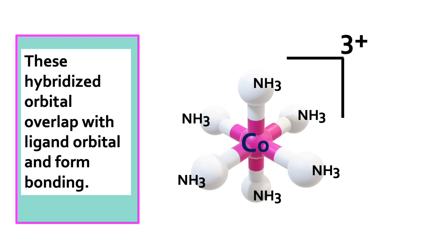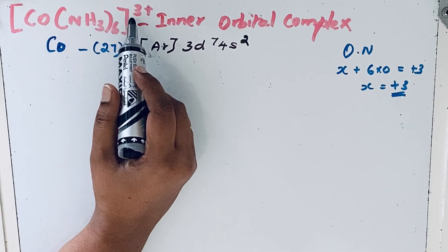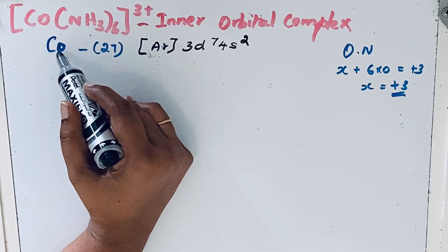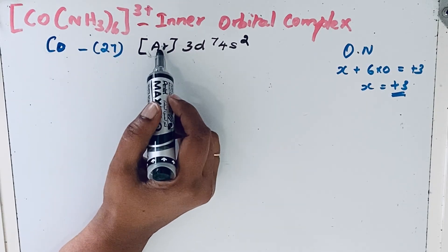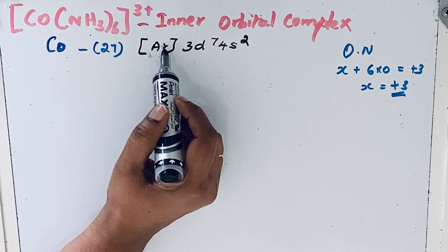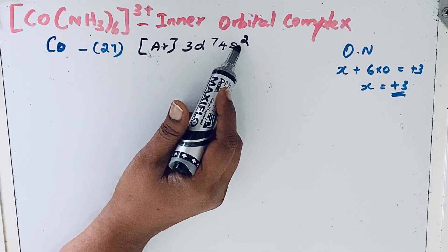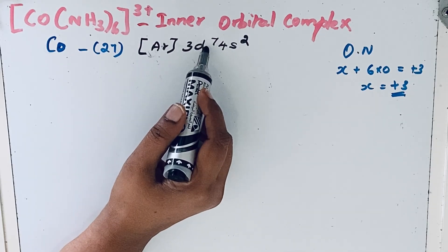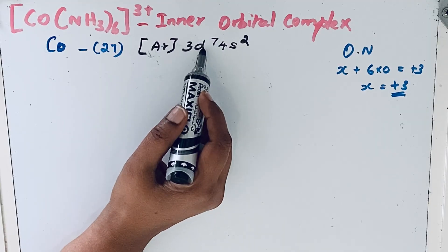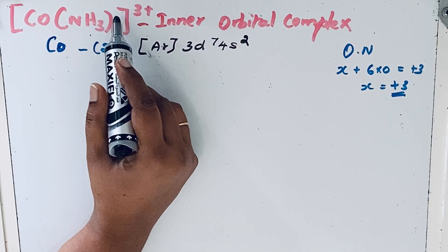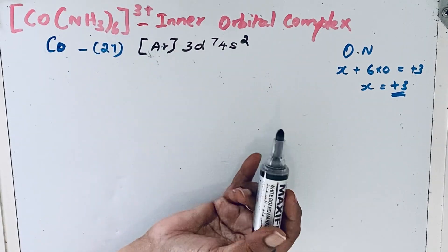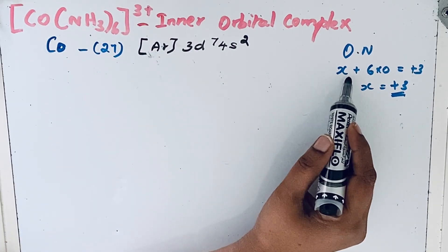Here, [Co(NH3)6]3+. The central atom is cobalt with atomic number 27 and electronic configuration argon 3d7 4s2. There are seven electrons in the d orbitals. First, let's find the oxidation state of cobalt in this complex.